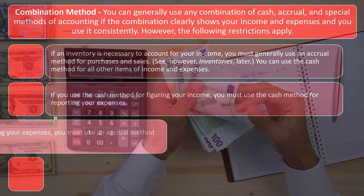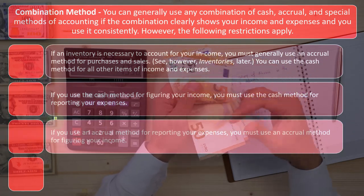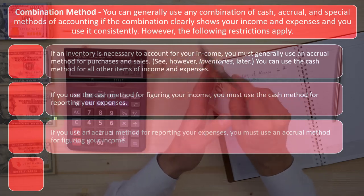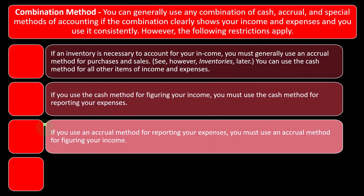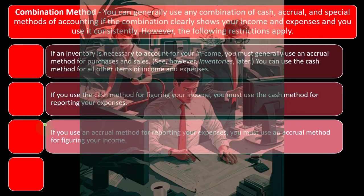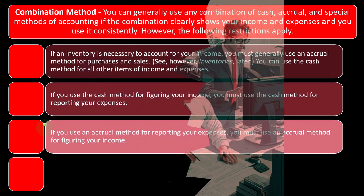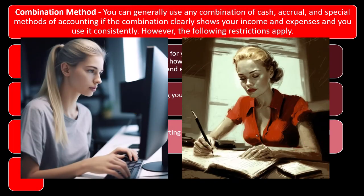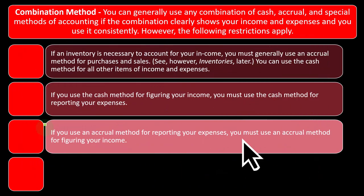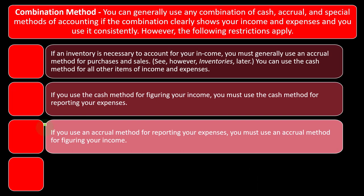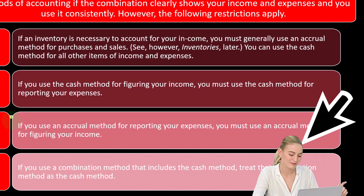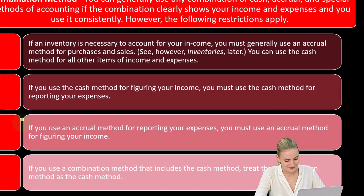The matching principle is something the accrual method is better at doing than the cash-based system, but you want some consistency with those methods. If you use an accrual method for reporting your expenses, you must use an accrual method for figuring your income. So if you use a combination method that includes the cash method, treat the combination method as the cash method.